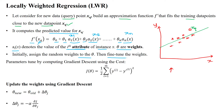Initially we assign random weights to theta, then update the weight values to reduce the cost close to zero. Parameter tuning is done by applying gradient descent to the cost function. We use the least square error method as the cost function: J = (1/2) * summation from i=1 to m of (y_i minus y-hat_i) squared.